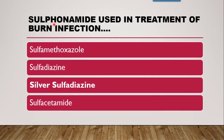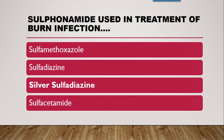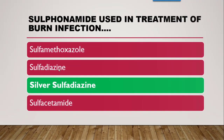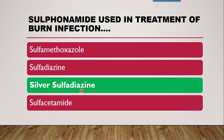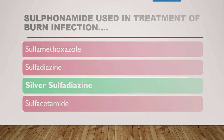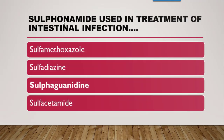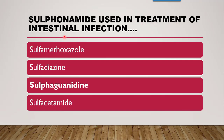Next question asks about a sulfonamide used in burn treatment. The correct answer is silver sulfadiazine. While sulfadiazine is also correct, the commonly known name is silver sulfadiazine.